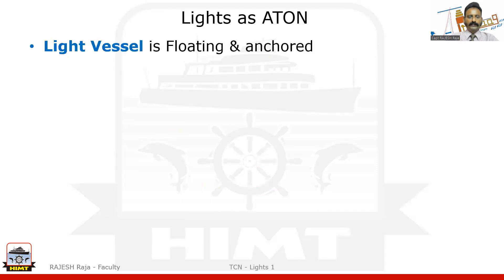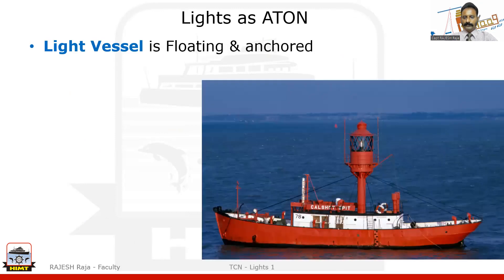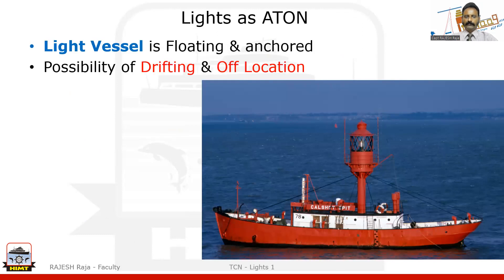The second one is a light vessel. The light vessel is a floating and anchored structure — here is a picture where you can see the light in the middle of the vessel. The purpose of this vessel is just to give you a light source as an aid to navigation. The problem with this one is it can drift because it is anchored, and it can also be removed off location for maintenance.